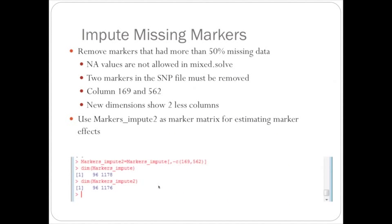To remove markers that had more than 50% missing data, two columns with NA after imputation need to be removed: column 169 and column 562. To remove them, use minus c and then the column names. The new dimensions show two fewer columns, confirming the two markers have been removed.